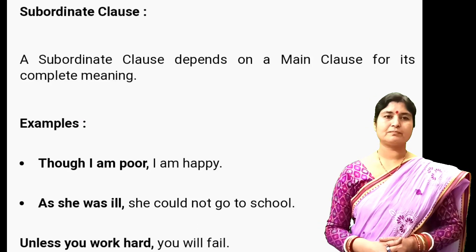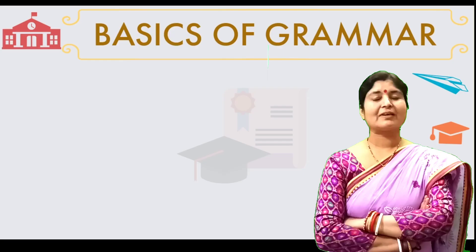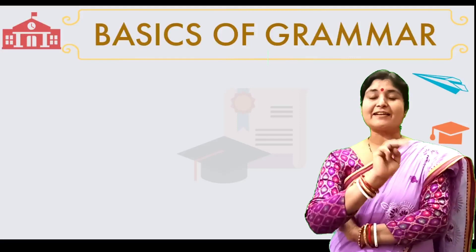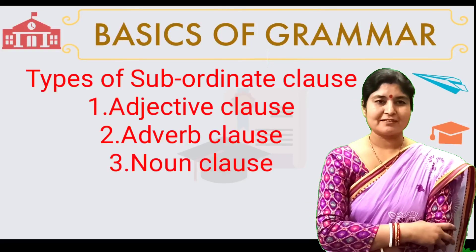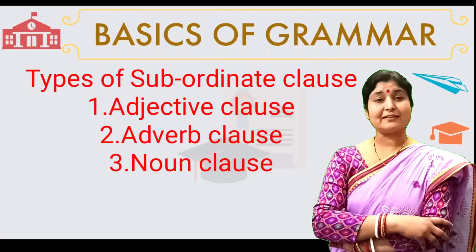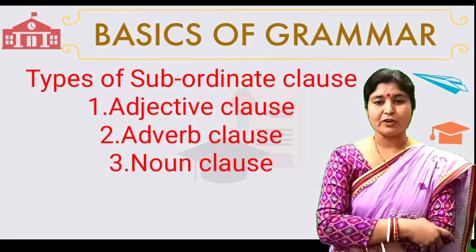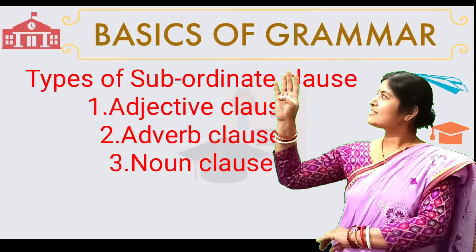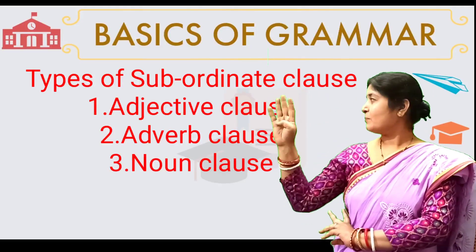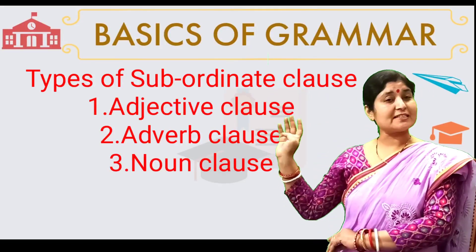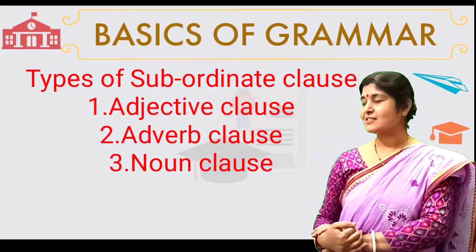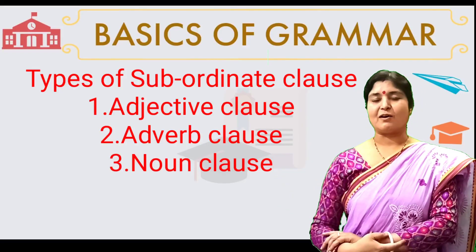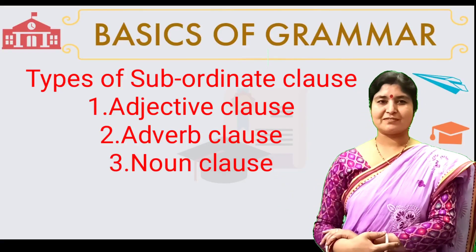There are three types of Subordinate Clauses. Number one is the Adjective Clause. Number two is the Adverb Clause. And number three is the Noun Clause.